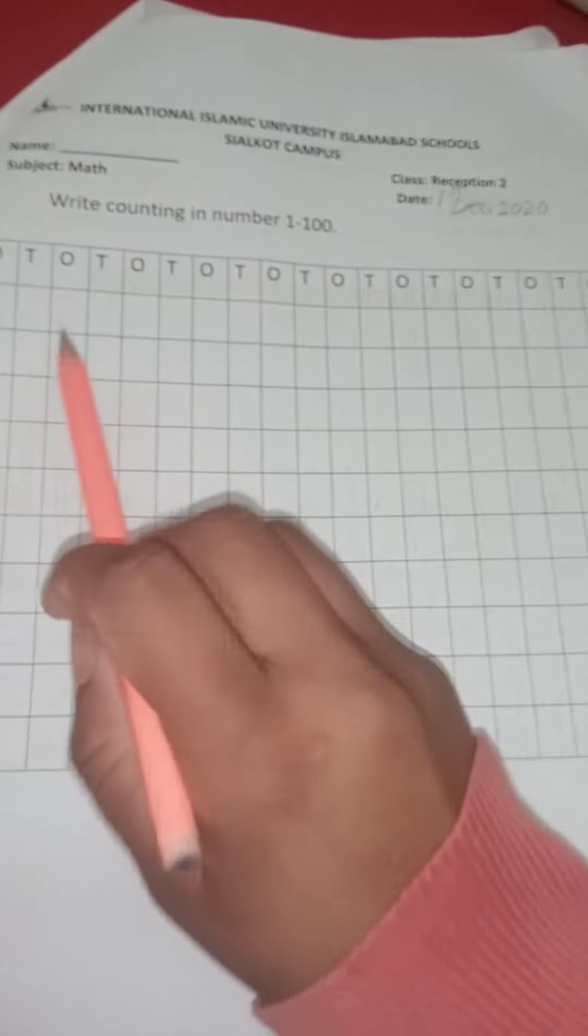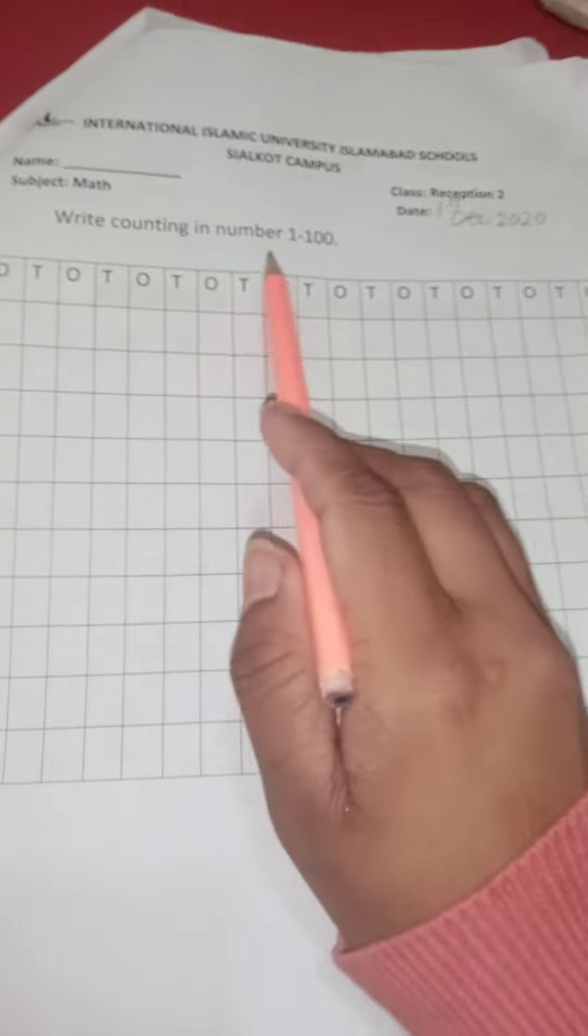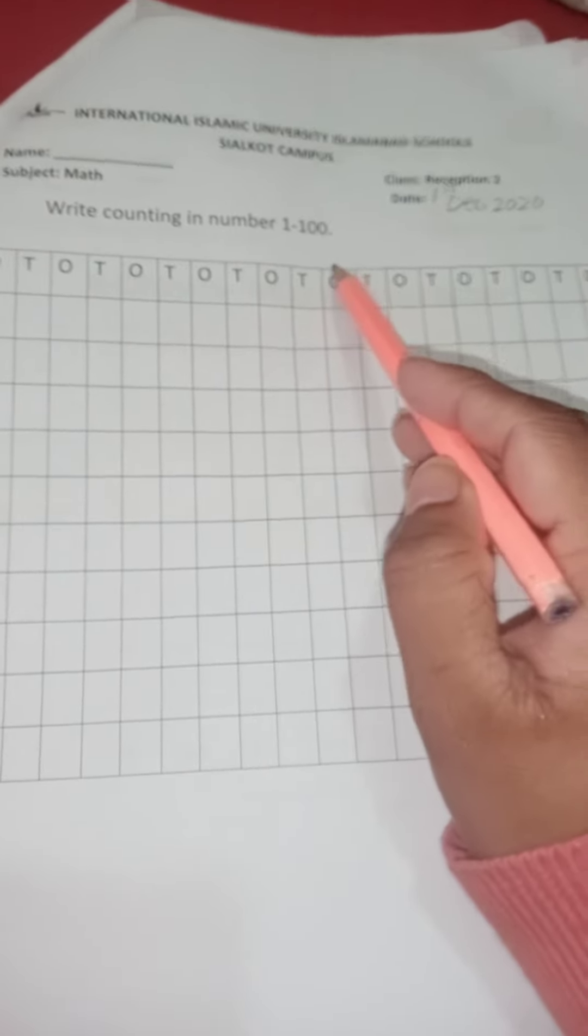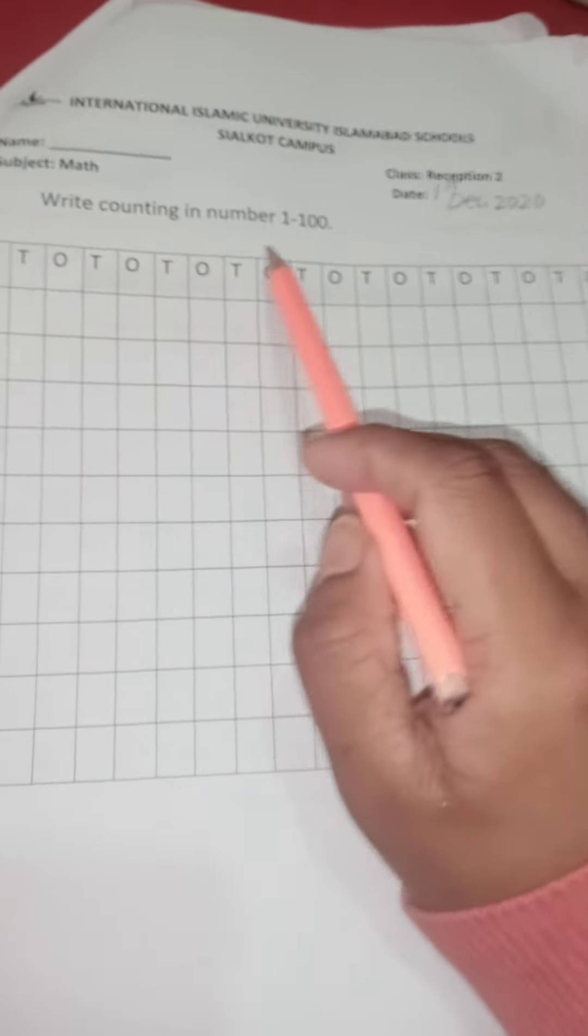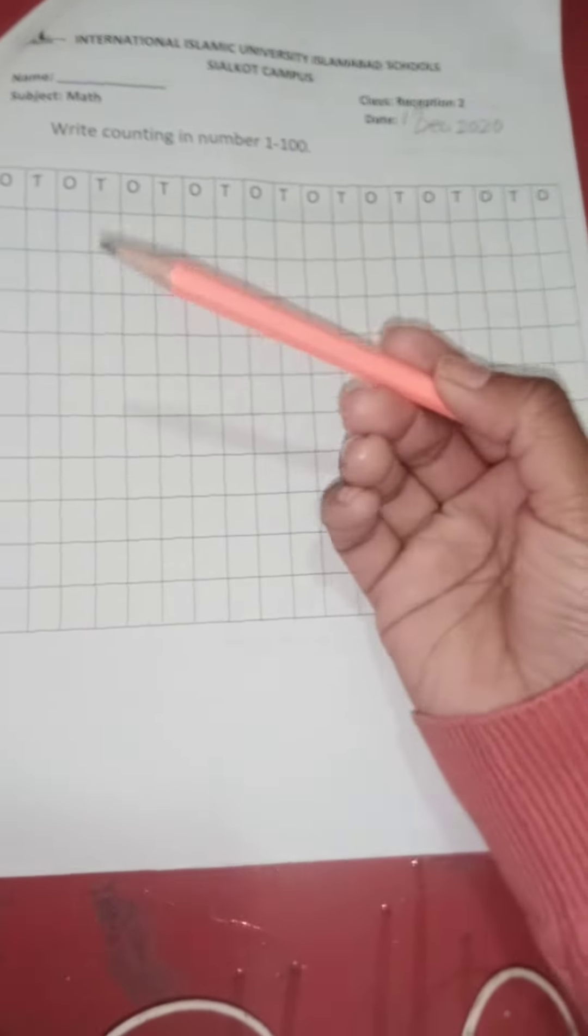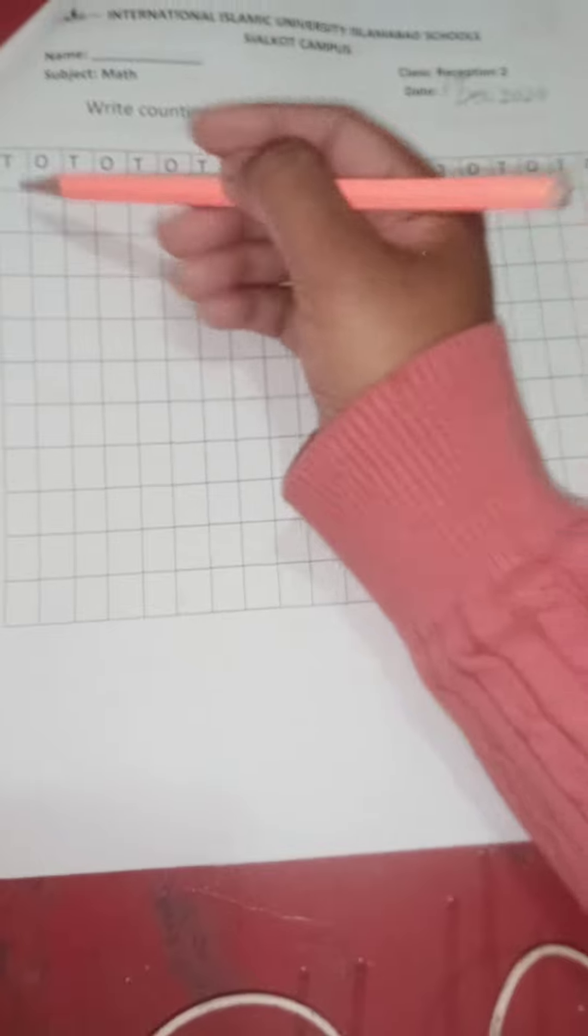And our work is, write counting in numbers 1 to 100. You see the box in front of you? Take the pencil and start from this box. Write and say with me.